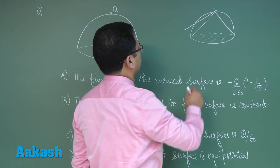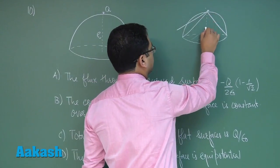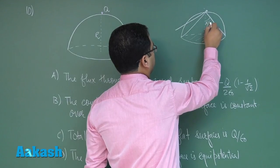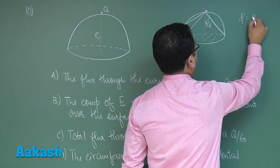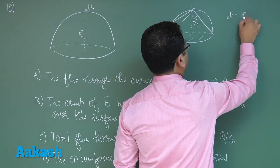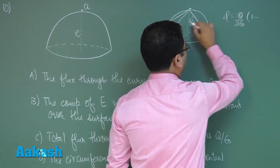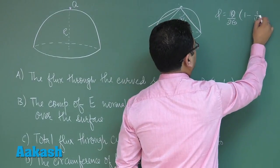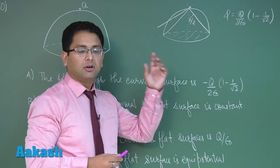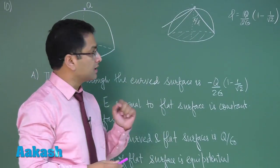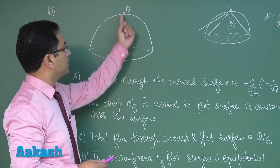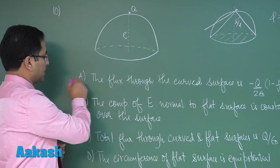This is r, so this angle would be π by 4. The flux would be Q by 2 epsilon naught, Q is written in capital, 1 minus cos π by 4, which is 1 by root 2. There's a negative sign, and in terms of flux we know negative indicates the incoming flux. Due to Q all the fluxes through the curve are incoming, so option A would be correct.